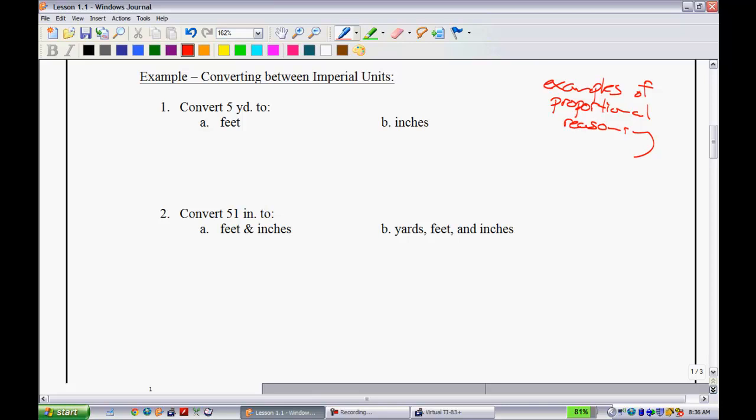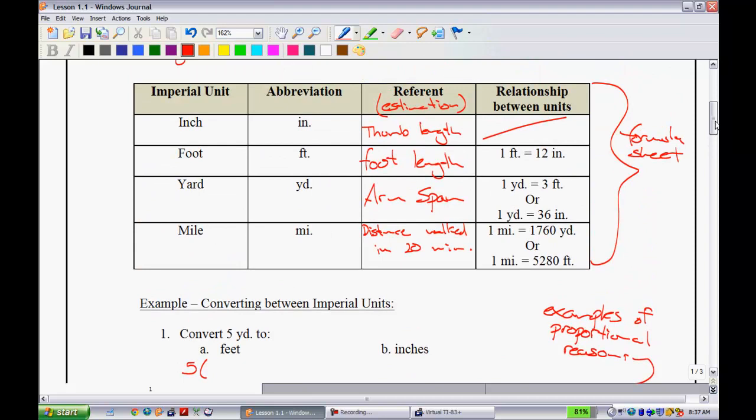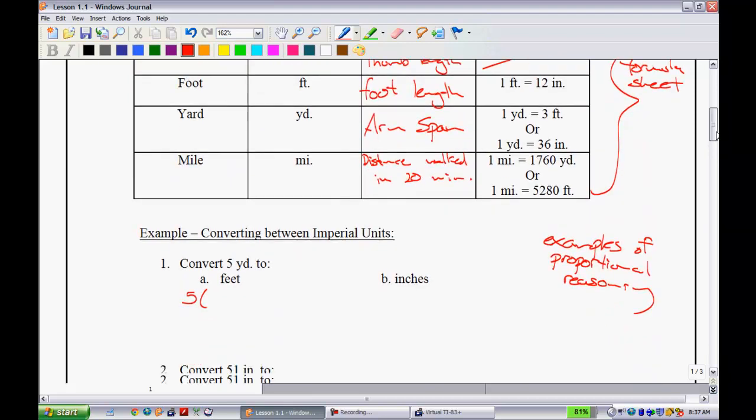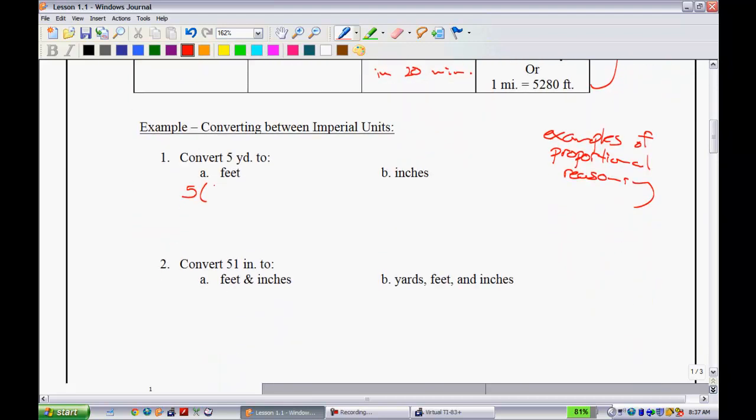These examples are going to be examples of proportional reasoning. I'm going to show you a couple different ways that we can convert. Example: Convert 5 yards to feet. If we have 5 yards, all we need to do is come up here and see how many feet are in a yard. We see that there's 3, so we have 5 times 3 feet, which equals 15 feet.